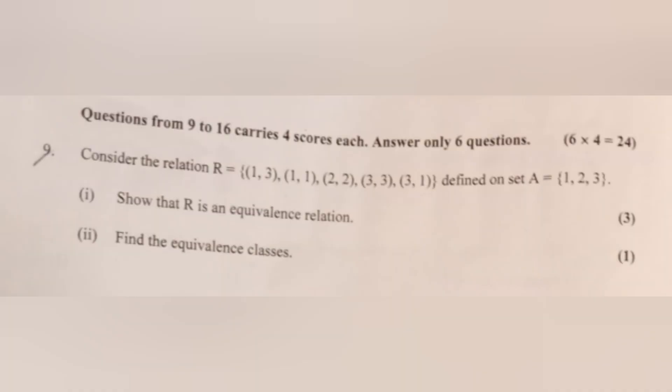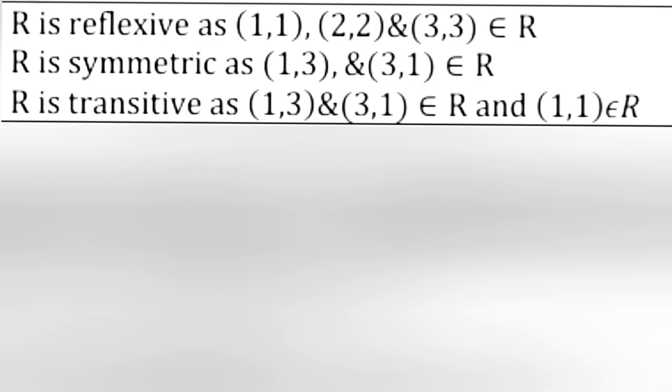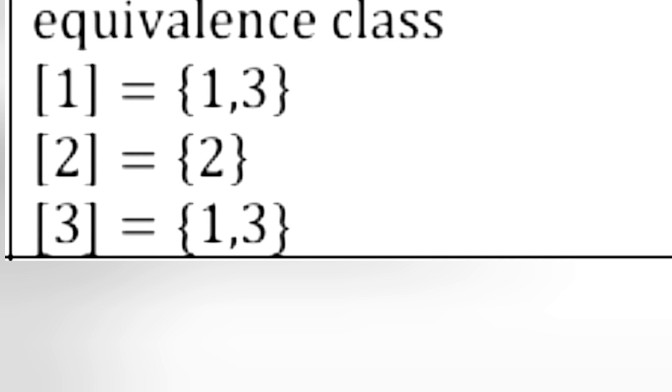Consider the relation R = {(1,3),(1,1),(2,2),(3,3),(3,1)} defined on set A = {1, 2, 3}. Show that R is an equivalence relation and find the equivalence classes. Answer: R is reflexive as (1,1), (2,2), and (3,3) belong to R. R is symmetric as (1,3) and (3,1) belong to R. R is transitive as (1,3) and (3,1) belong to R, and (1,1) belongs to R. Equivalence classes: [1] = {1,3}, [2] = {2}, [3] = {1,3}.